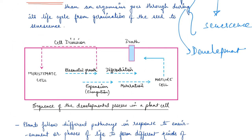In the diagrammatic representation, we have meristematic cells that keep on dividing — there is plasmatic growth, with some cells continuing to divide through cell division. After plasmatic growth comes differentiation, where cells mature and lead toward senescence. In between there is an expansion phase, elongation phase, and maturation phase, and the mature cells ultimately lead to death.